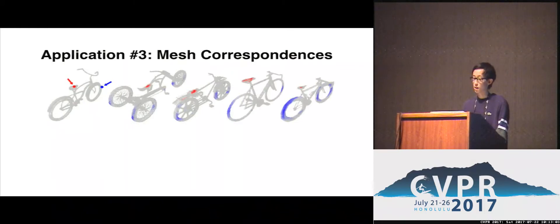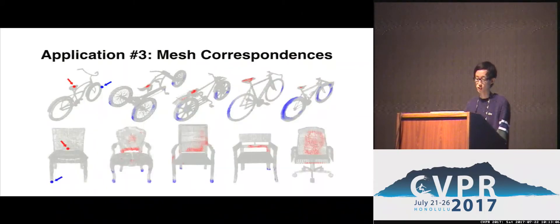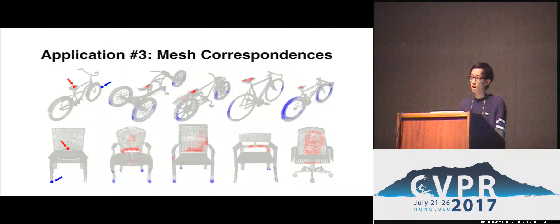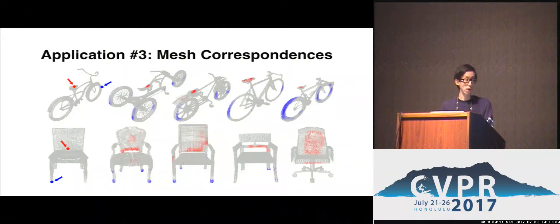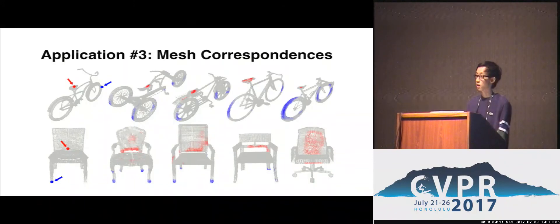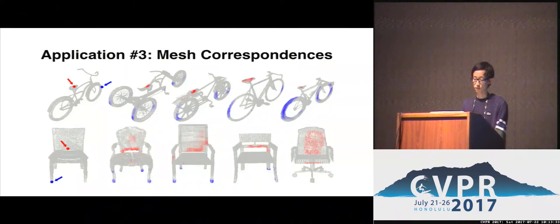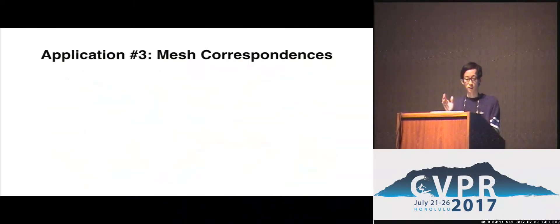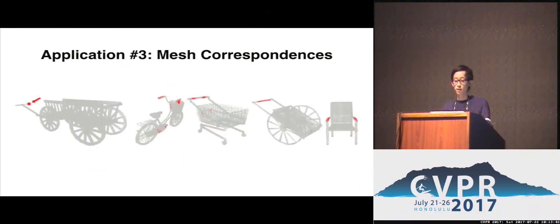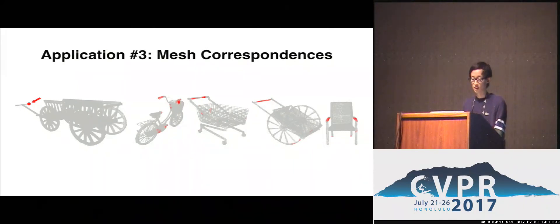In the third application, we use 3D Match to find correspondences between full 3D model meshes. The style of data here is quite different from what 3D Match was originally trained on, testing whether it can serve as a general purpose 3D local shape descriptor. Without any fine-tuning, 3D Match is still able to find geometrically similar points on 3D meshes — for example, red points on bicycle seats match to other bicycle seats, and blue points on chair feet match to similar chair feet. 3D Match is also able to match the handle of a wagon to handles of other objects based on geometric similarity.